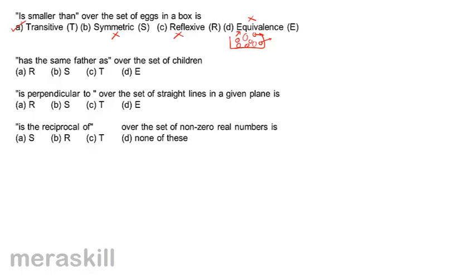Similarly, consider 'has the same father as' over the set of children A, B, C. If A has the same father as B, then B also has the same father as A — so symmetry is valid. If A has the same father as B, and B has the same father as C, then A also has the same father as C — so transitivity is valid too. So both symmetry and transitivity are valid here.